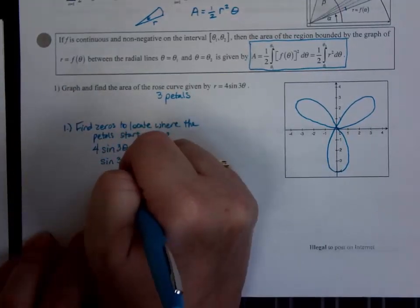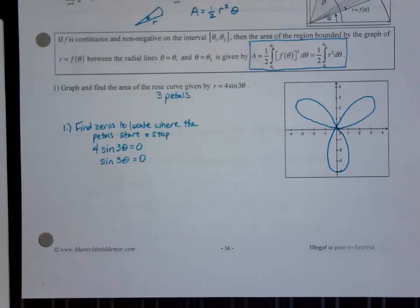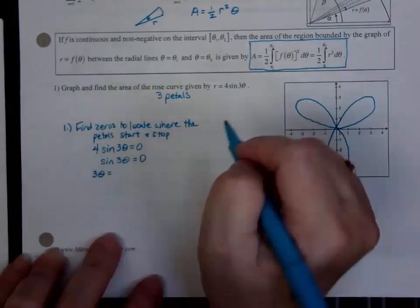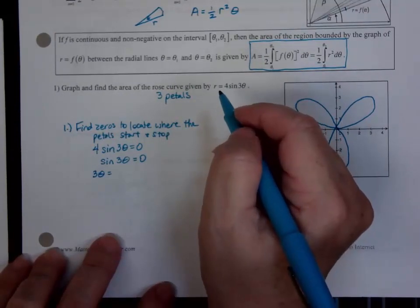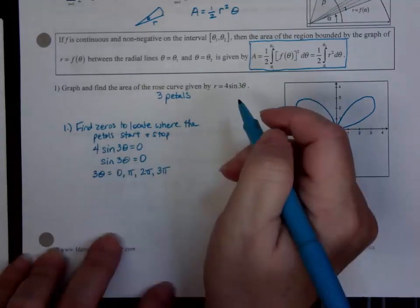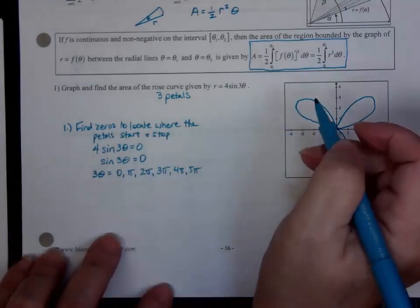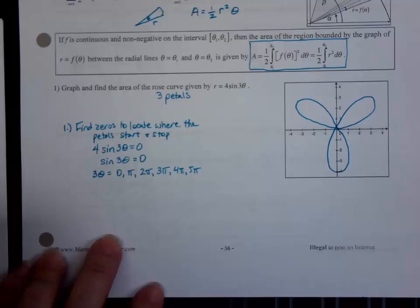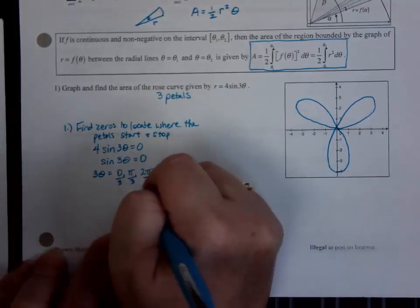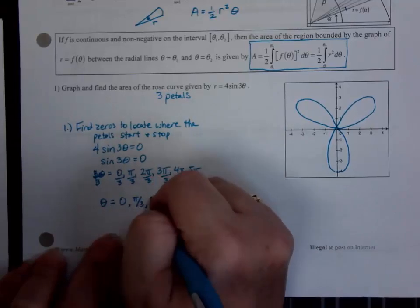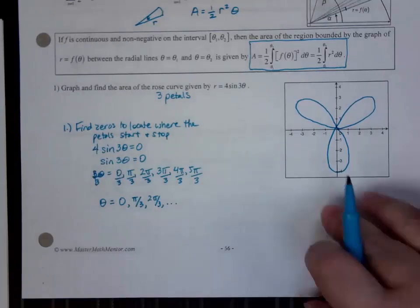Set 4 sine 3 theta equal to zero, since every petal starts and stops when the radius is zero. Divide by four: sine of 3 theta equals zero. The number out front tells you how many times to go around the circle. So 3 theta equals 0, pi, 2 pi, 3 pi, 4 pi, 5 pi. Dividing by three: theta equals 0, pi over 3, 2 pi over 3, and so on.